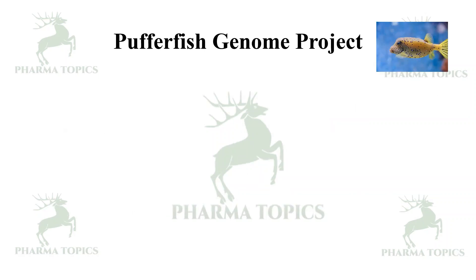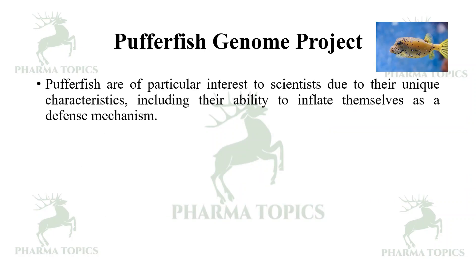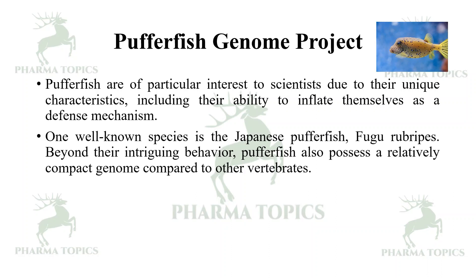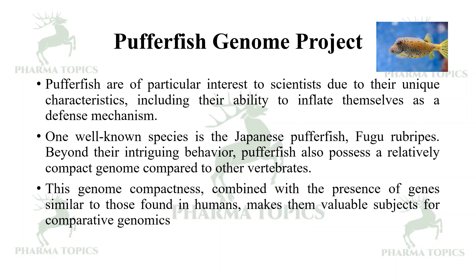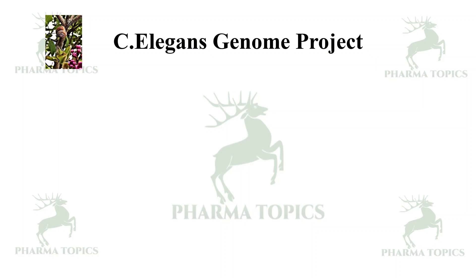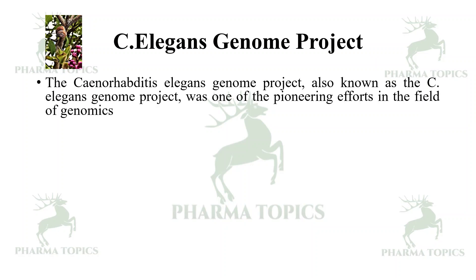The Puffer Fish Genome Project: puffer fish are of particular interest to scientists due to their unique characteristics, including their ability to inflate themselves as a defense mechanism. One well-known species is the Japanese puffer fish, Fugu rubripes. Beyond their intriguing behavior, puffer fish possess a relatively compact genome compared to other vertebrates. The genome compactness combined with the presence of genes similar to those in humans makes them valuable subjects for comparative genomics.